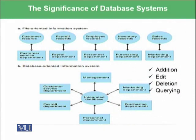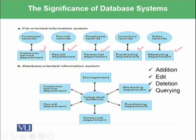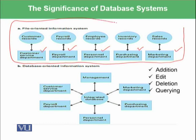For example, we want to store information in an information system related to the marketing department, purchasing department, personal department, payroll department, and customer service department. The structure highlighted at the top of this figure is basically a file-oriented information system.